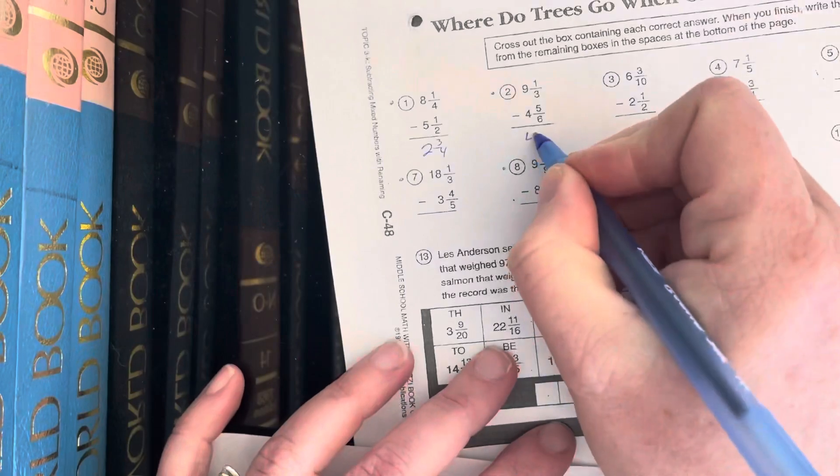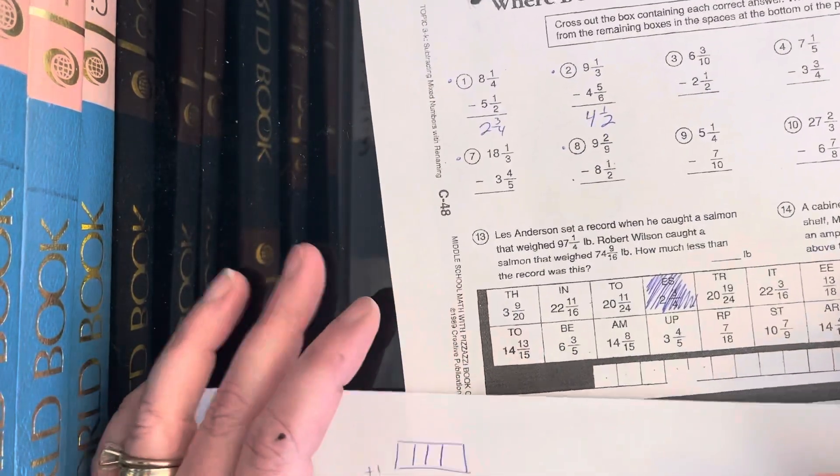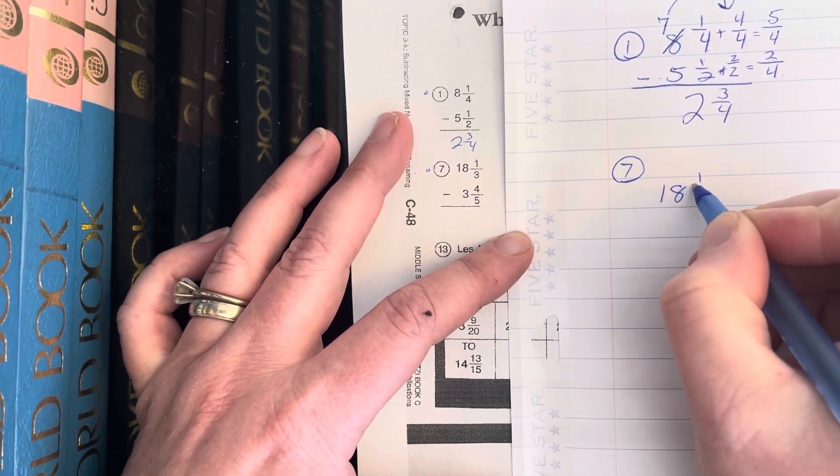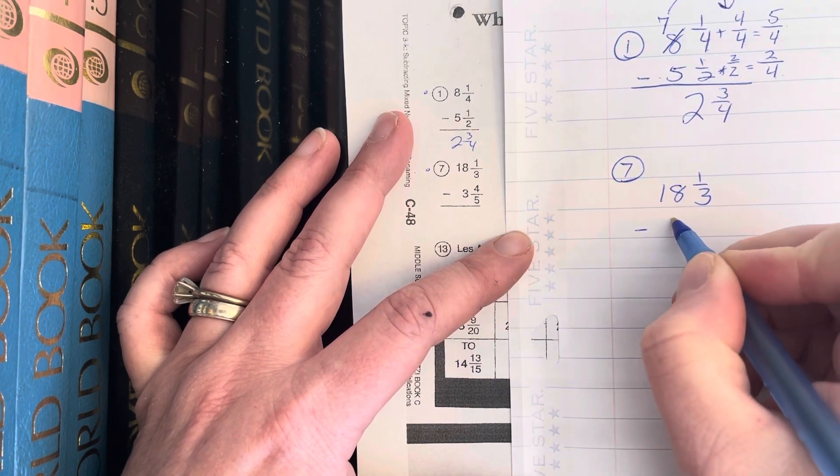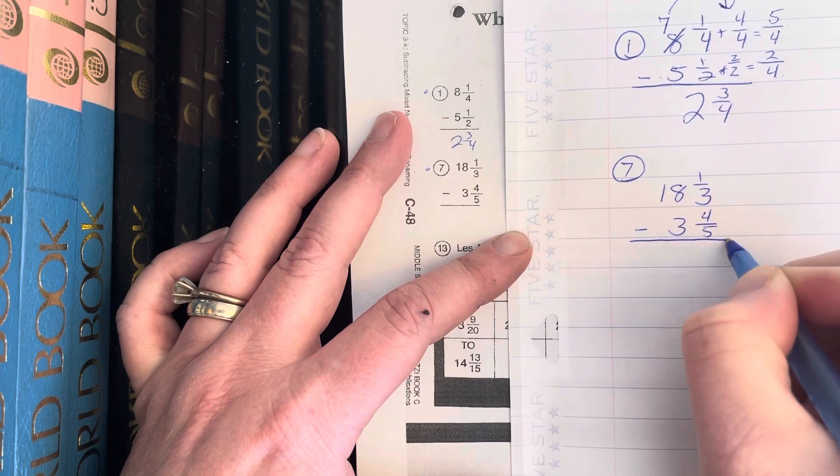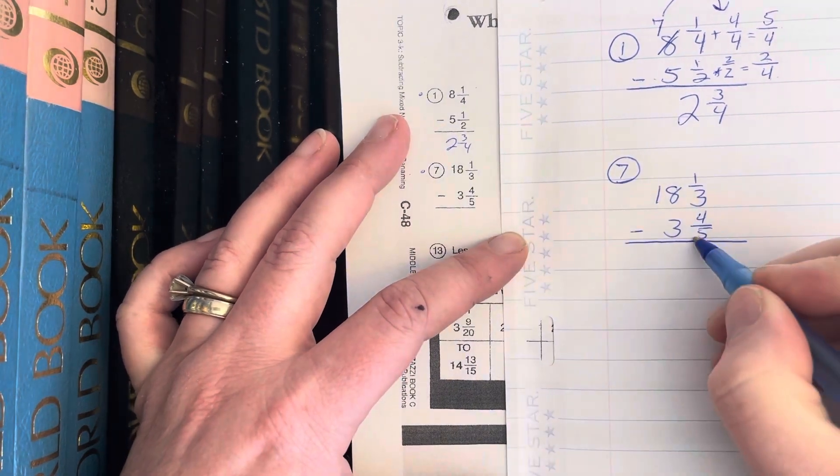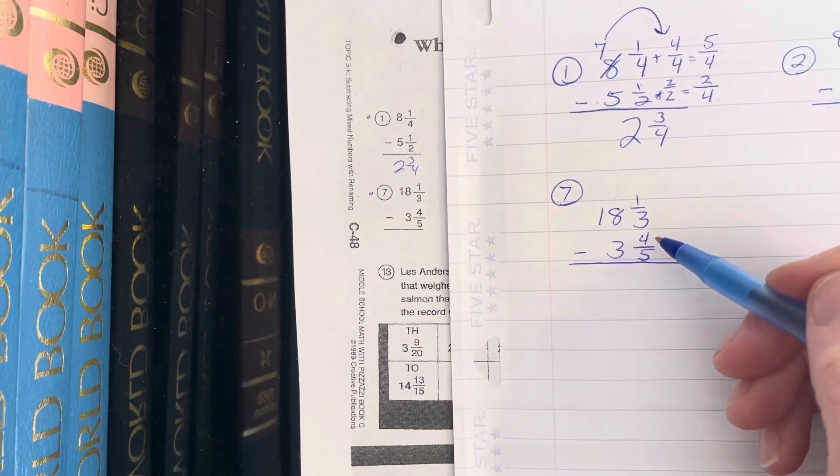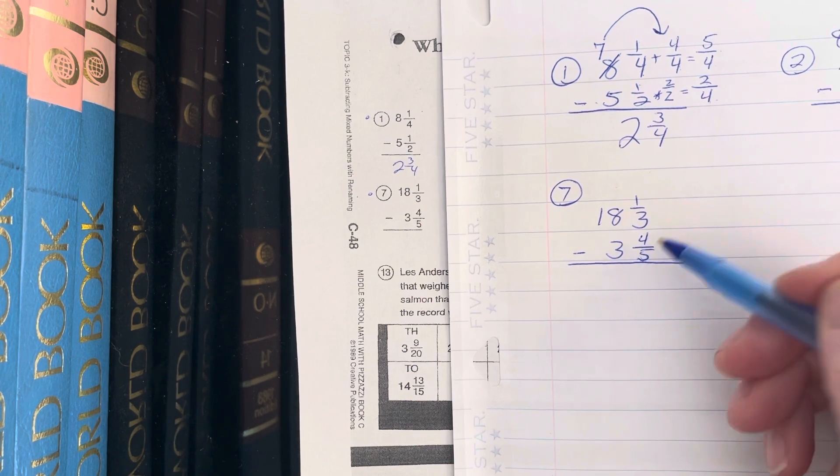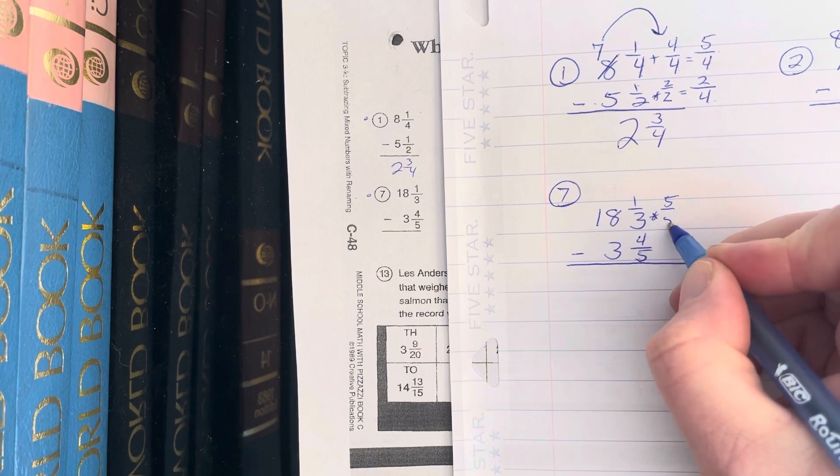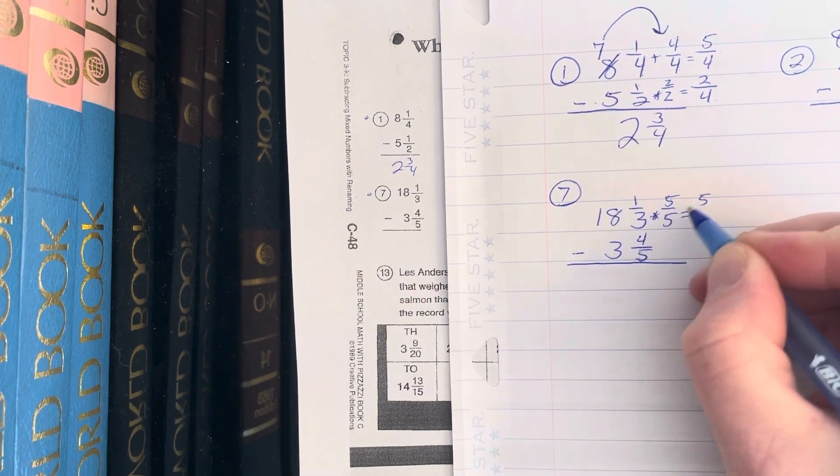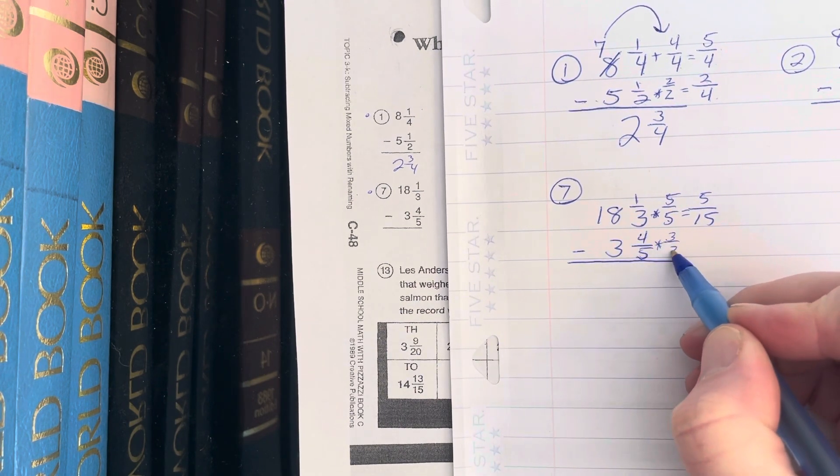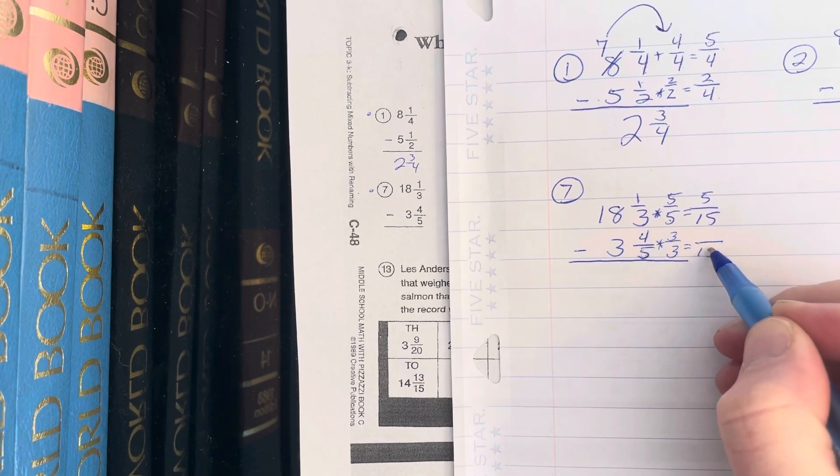Let's do number seven. I'm gonna copy my problem. That's a big number: 18 and 1/3 minus 3 and 4/5. Alright, so 3 and 5 - I can't really multiply 3 by a whole number to get to 5, so I think I'm gonna change both denominators. In this case, I'm gonna use a denominator of 3 times 5, which is 15. So this fraction I'm multiplying by 5/5, and this fraction I'm gonna be multiplying by 3/3 because ultimately I want a denominator of 15.